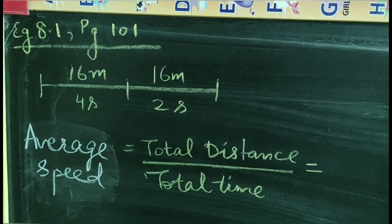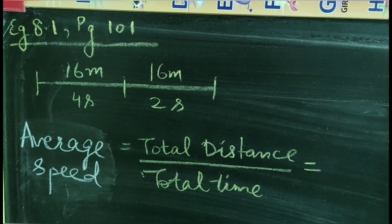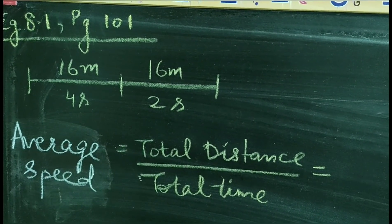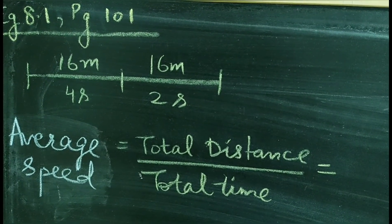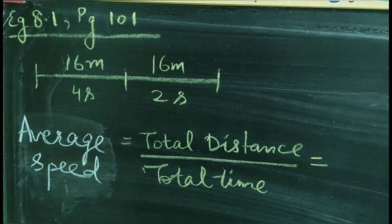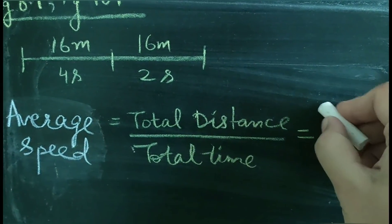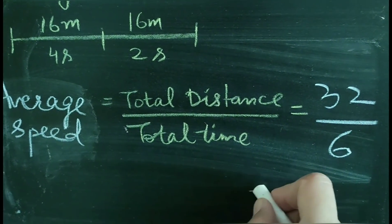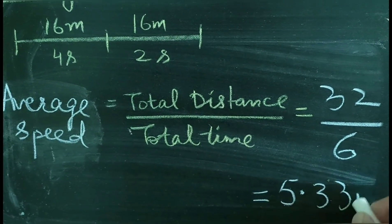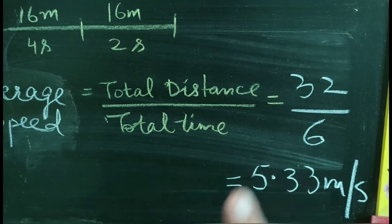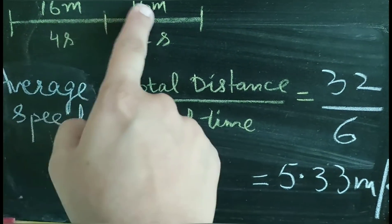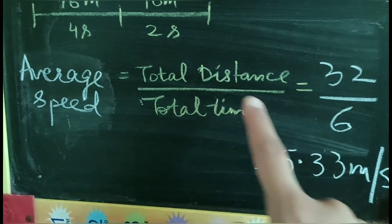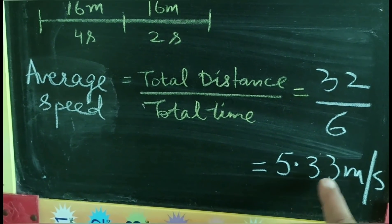This is example 8.1 from page 101 of your NCERT. An object covers the first 16 meters in 4 seconds and the next 16 meters in 2 seconds. Calculate the average speed. Average speed is total distance upon total time. Total distance is 16 plus 16, which is 32 meters. Total time is 4 plus 2, which is 6 seconds. So 32 divided by 6 gives 5.33 meters per second — this is a non-terminating decimal, but we leave it at the second decimal place.